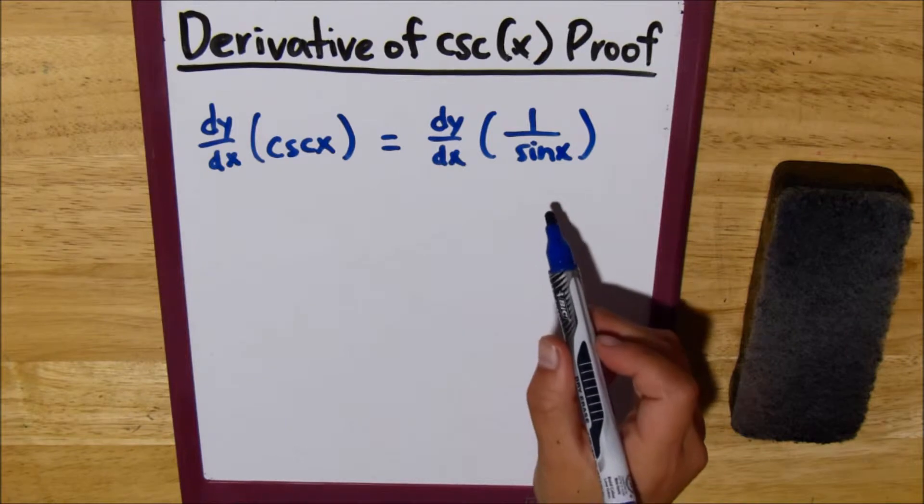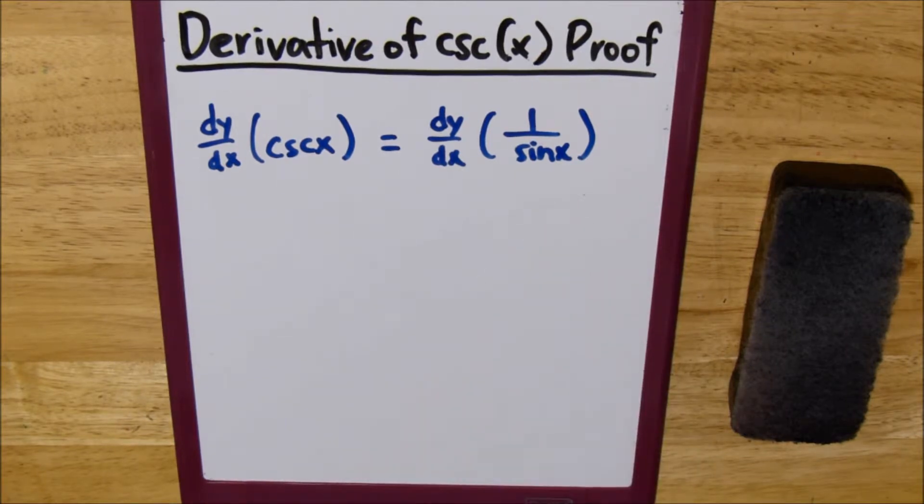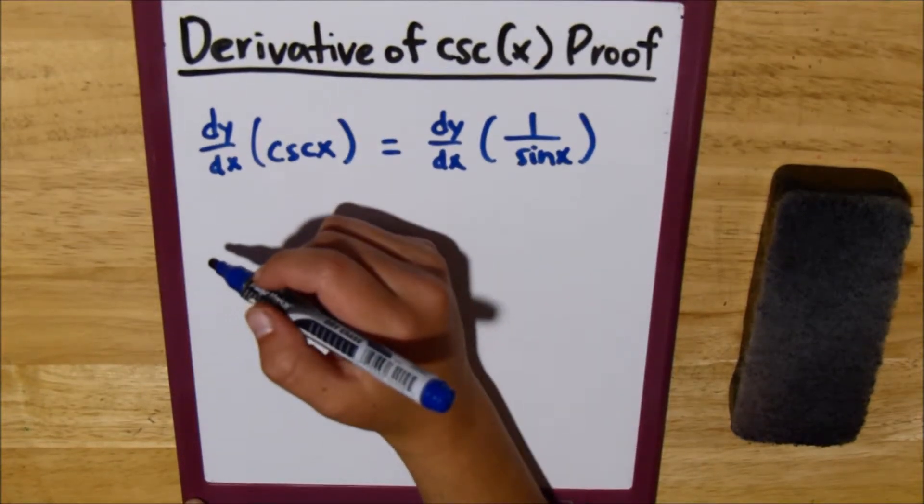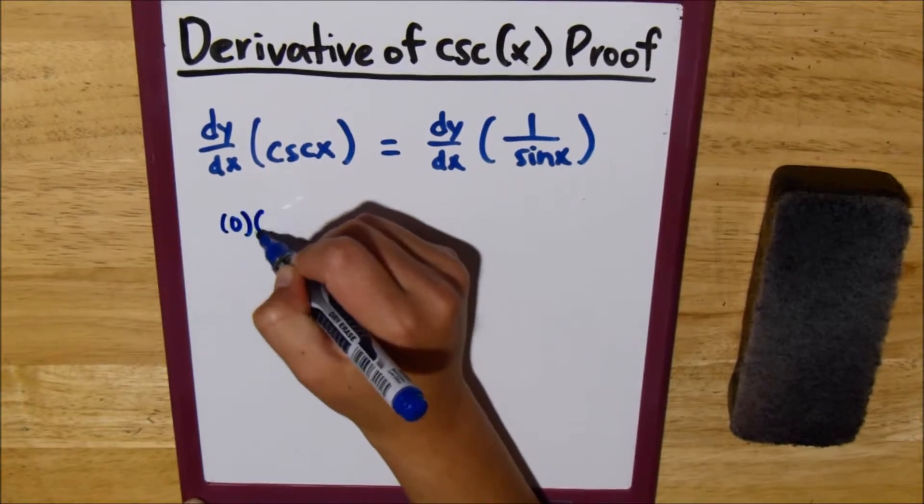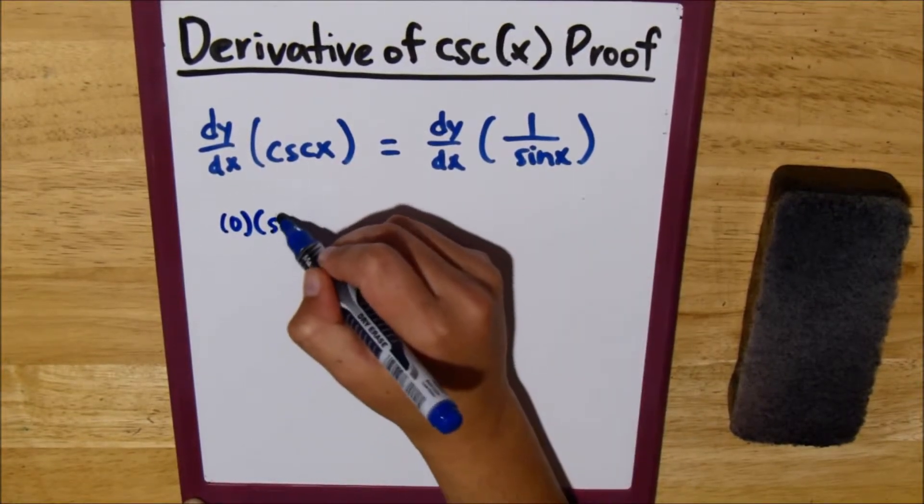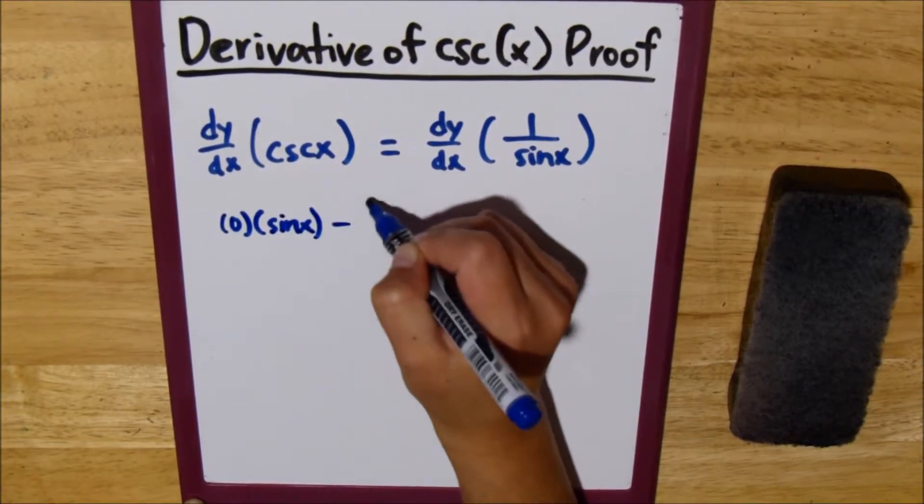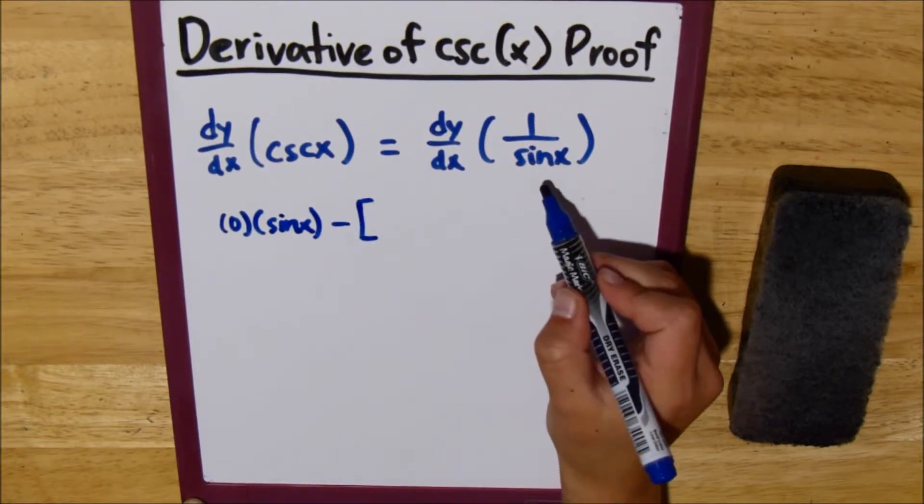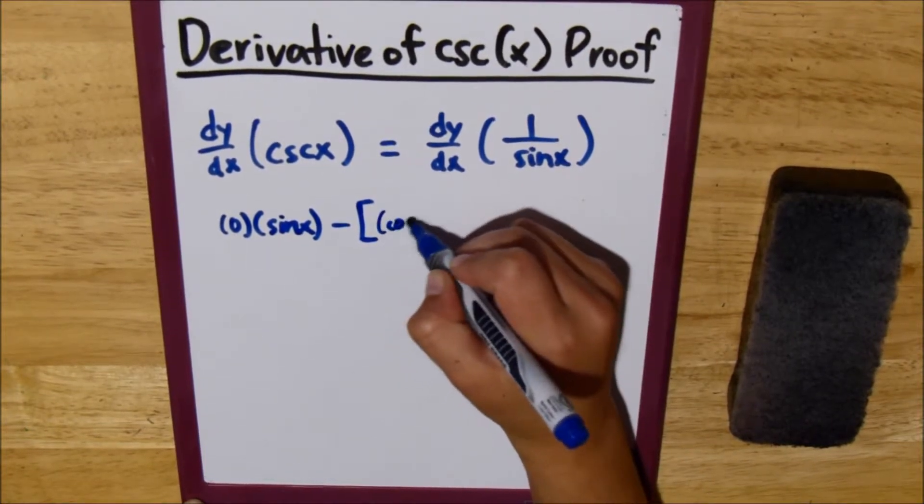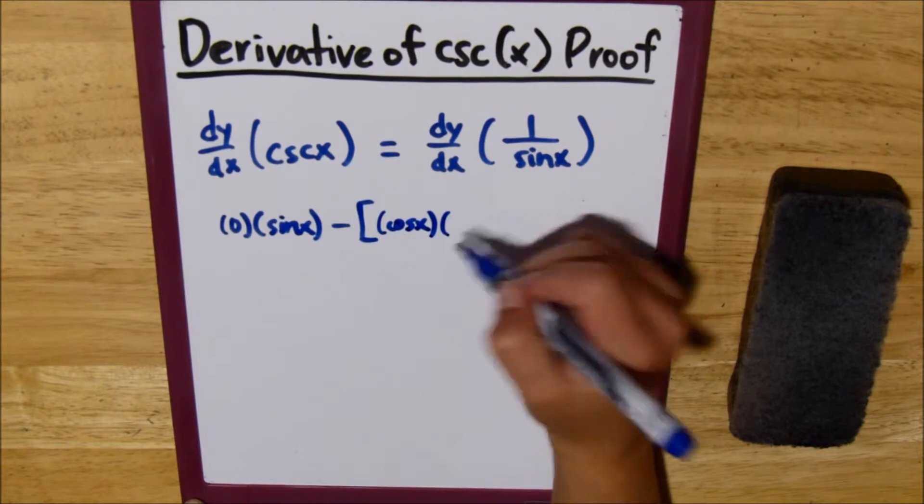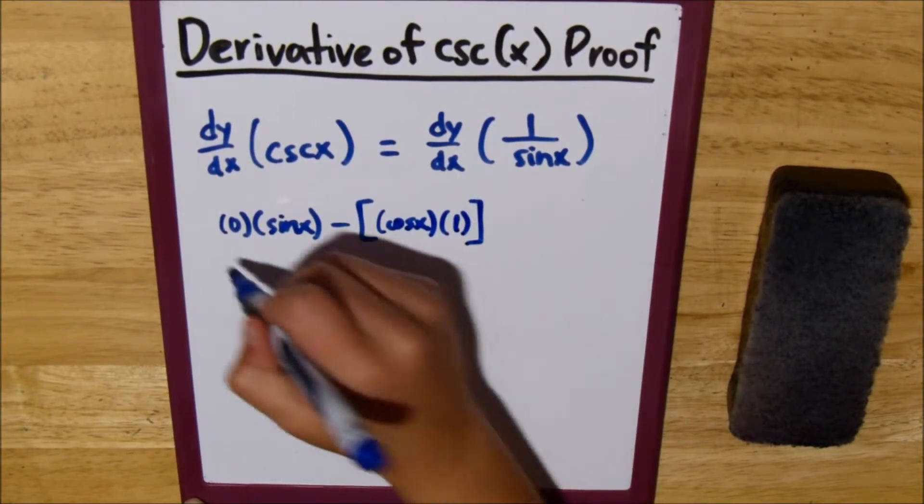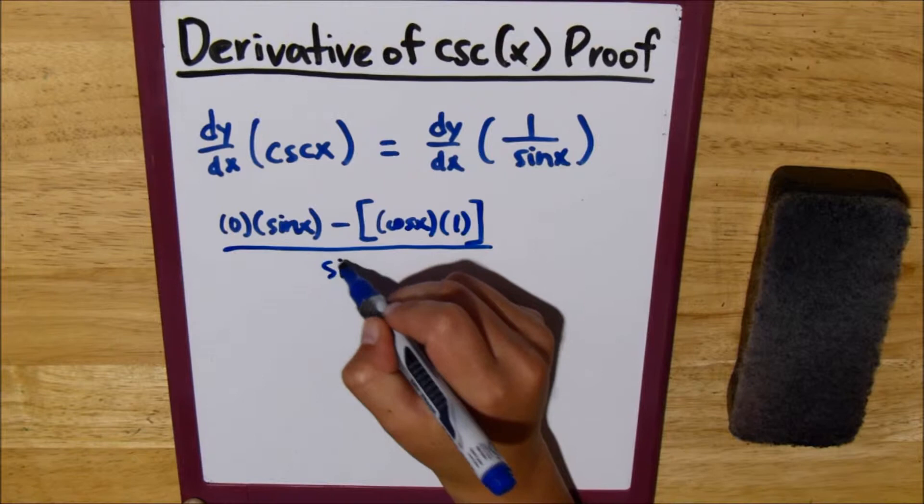And then we can use the quotient rule to derive 1 over sine x. So we take the derivative of the numerator, 0, times the denominator, sine of x, subtract it. We take the derivative of the denominator, that's cosine of x, and multiply that by the numerator all over the denominator squared.